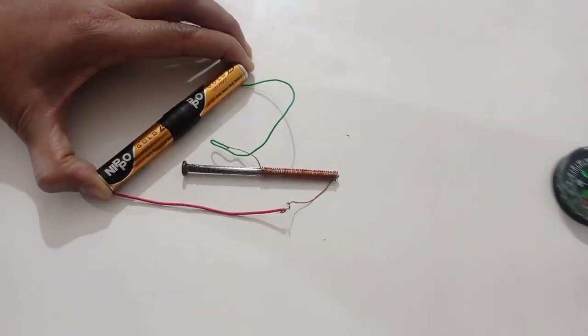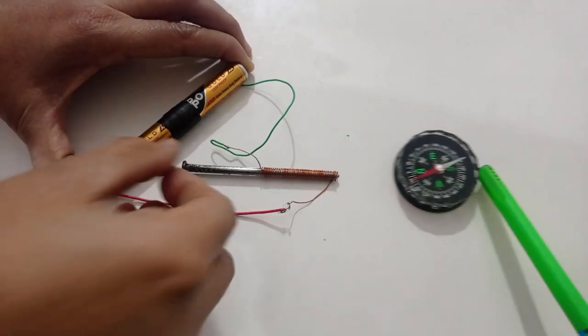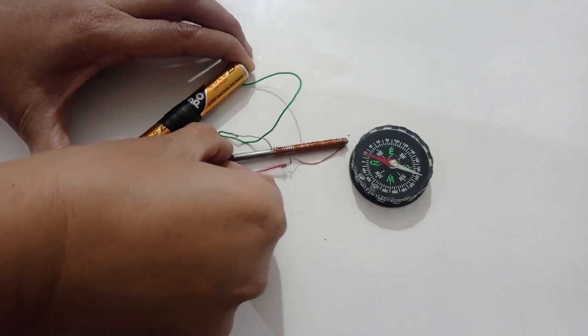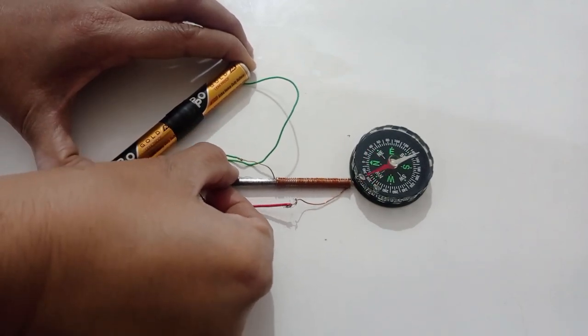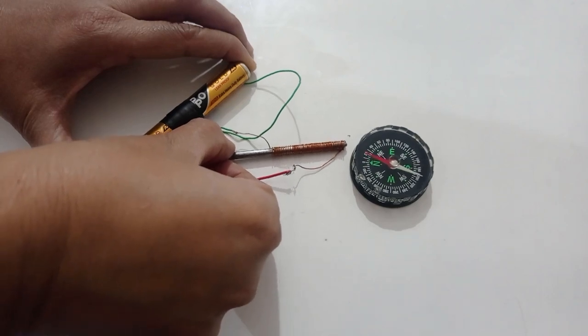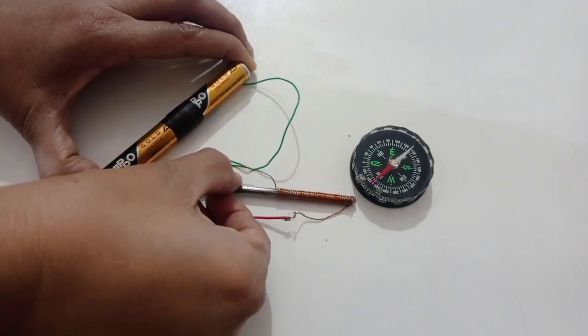Let's confirm the same using a compass. As we can see, this end of our electromagnet attracts north pole of the needle of compass, which confirms that this indeed is south pole.